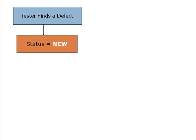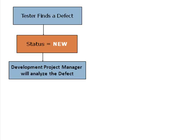Suppose a tester finds a defect. The defect is assigned a status: New. The defect is assigned to the development project manager, who will analyze the defect.